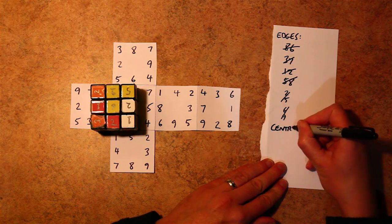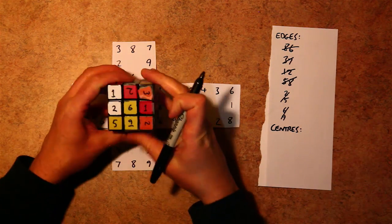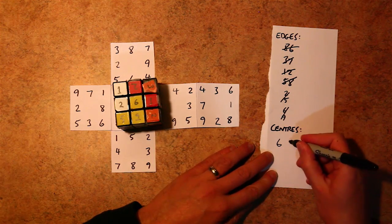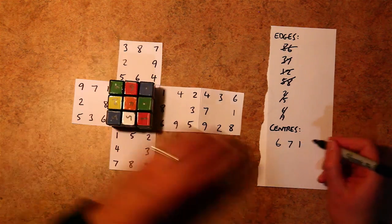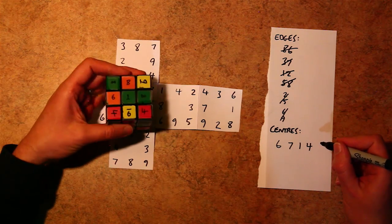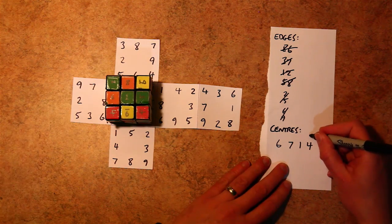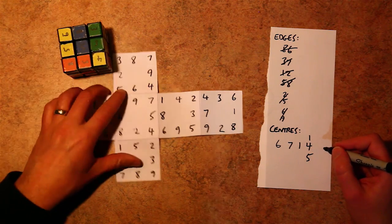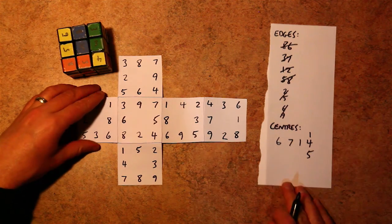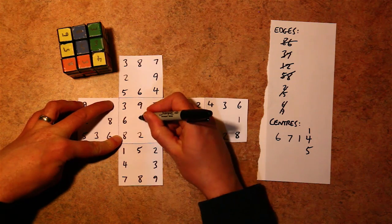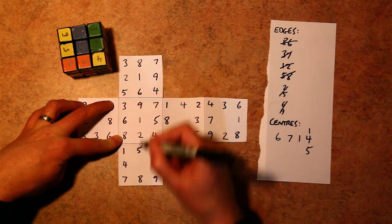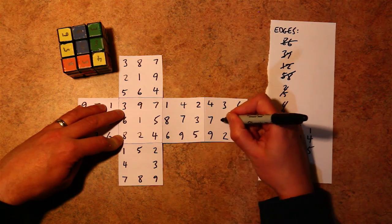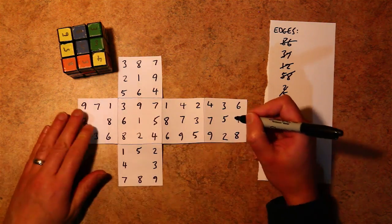Once we have all our corners and all our edges written in, we can do the centers. So this is just a matter of writing down the numbers for all of the centers and figuring out where they go. And this is purely a Sudoku thing. You can't count on the orientations of the centers making any sense, because when the cube is in a scrambled state, the centers could have any orientation. So this is purely a numbers thing.